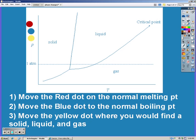So pause the iPod and answer those three questions in your head. For the first one, if we want the normal melting point, we find one ATM and melting should be between solid and liquid. Normal boiling should also be at one ATM, but it should be between the liquid and gas. And if we want to find solid, liquid, and gas, that would have to be the triple point, which is located there.